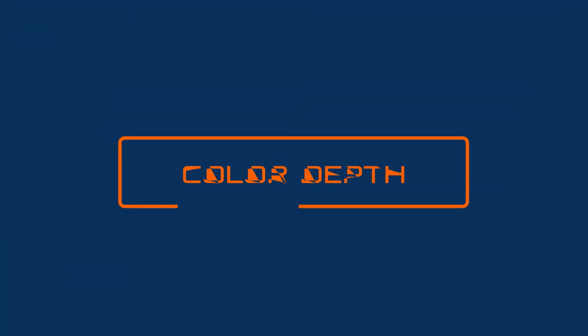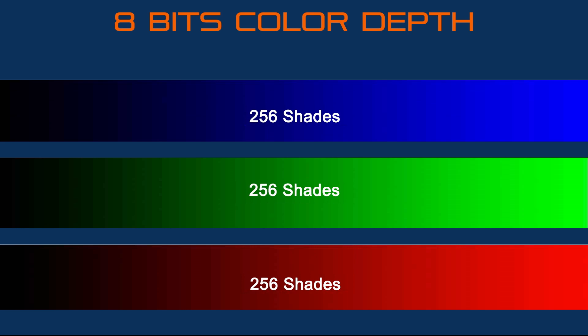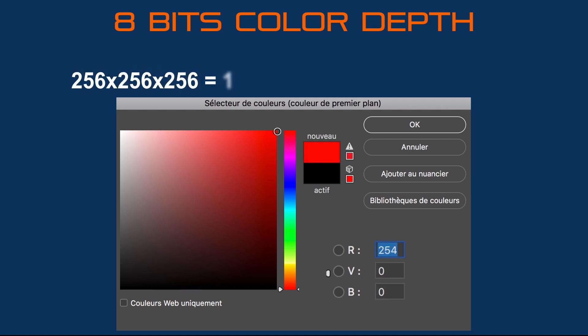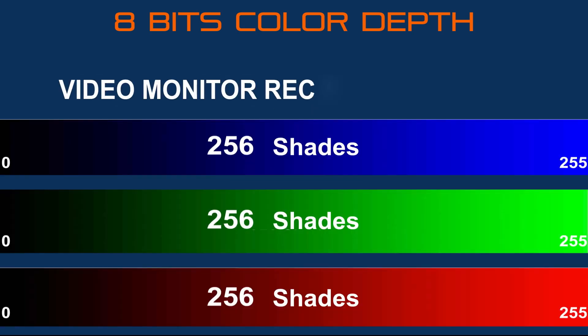Now let's talk about color depth. An image is composed of red, blue, and green. An RGB 8-bit image is composed of 256 red values, 256 green values, and 256 blue values. One value of red, one of green, and one of blue give you one color. When you multiply all these values you get more than 16 million colors. However, an 8-bit video device cannot display 16 million colors but only 10 million — this is called RGB limited, with nuances from 16 to 235 rather than 0 to 256.